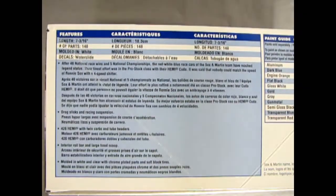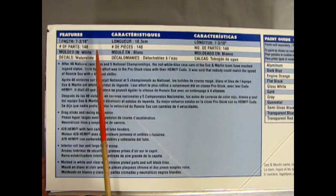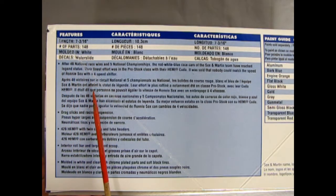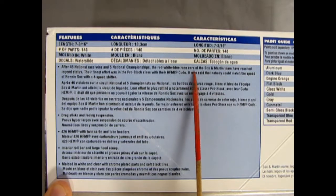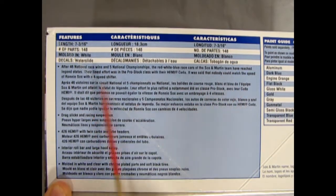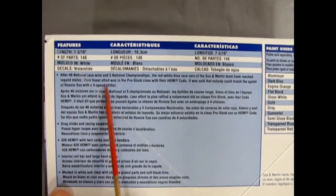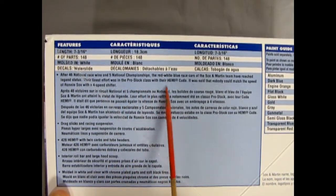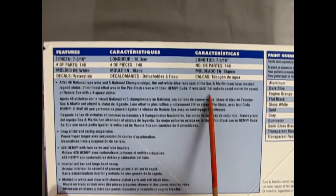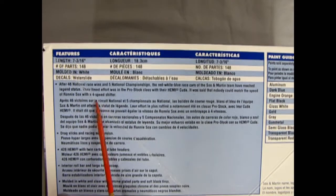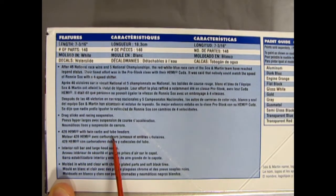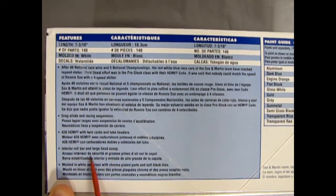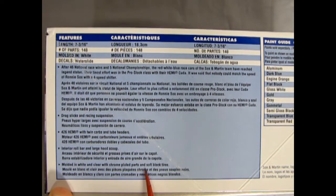It says it is seven and three sixteenths inches long, there's 148 parts molded in white with chrome and waterslide decals. After 46 national race wins and five national championships, the red, white and blue race cars of the Sock and Martin team have reached legend status. Their finest effort in the pro stock classic class with their Hemi-Cuda, it was said that nobody could match the speed of Ronnie Socks with a four speed shifter. Okay, so we get drag slicks and racing suspension, a 426 Hemi with twin carbs and tube headers, interior roll bar and large hood scoop, molded in white and clear with chrome plated parts and soft black tires.